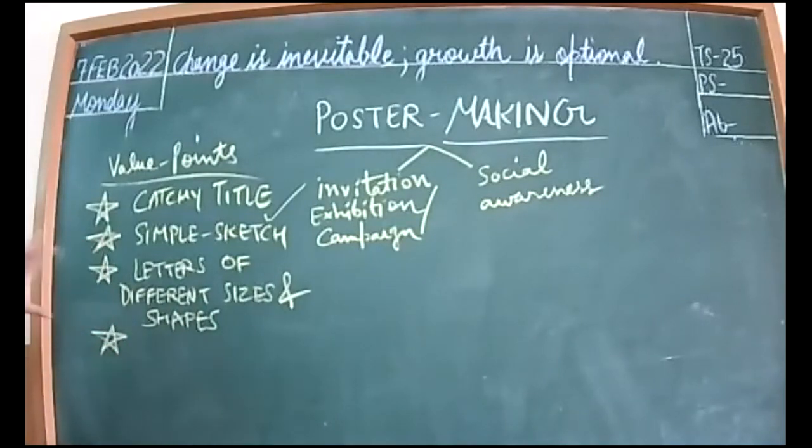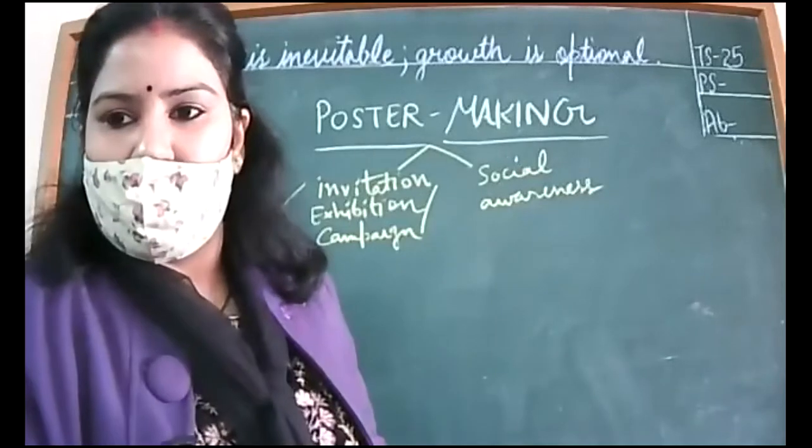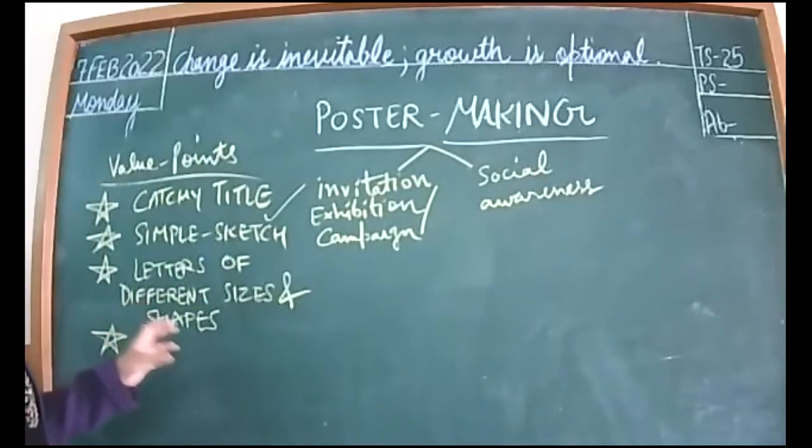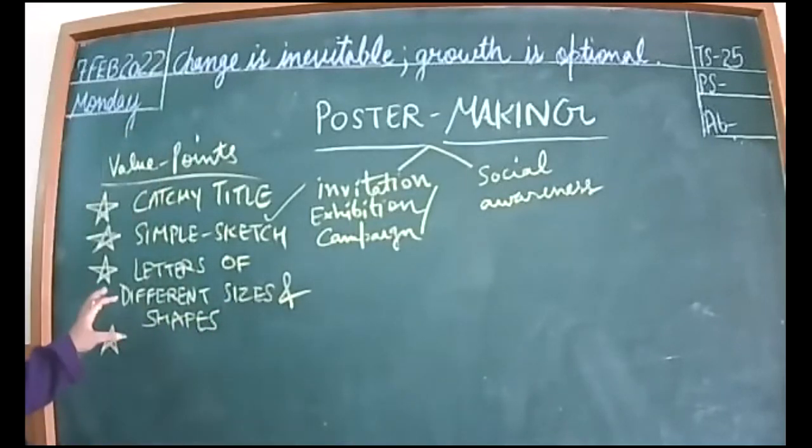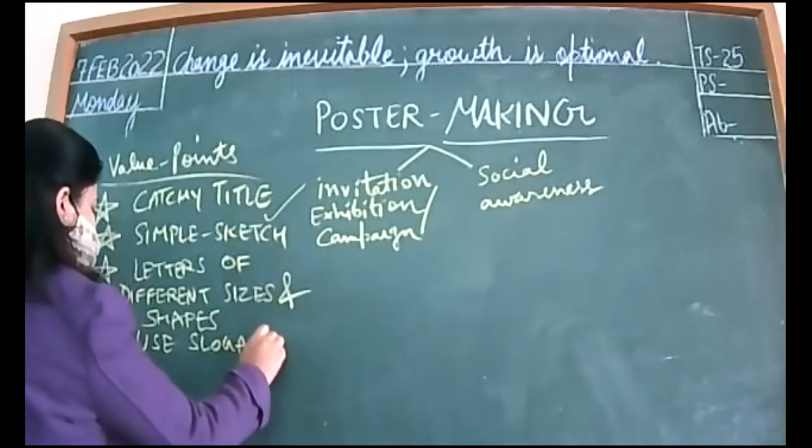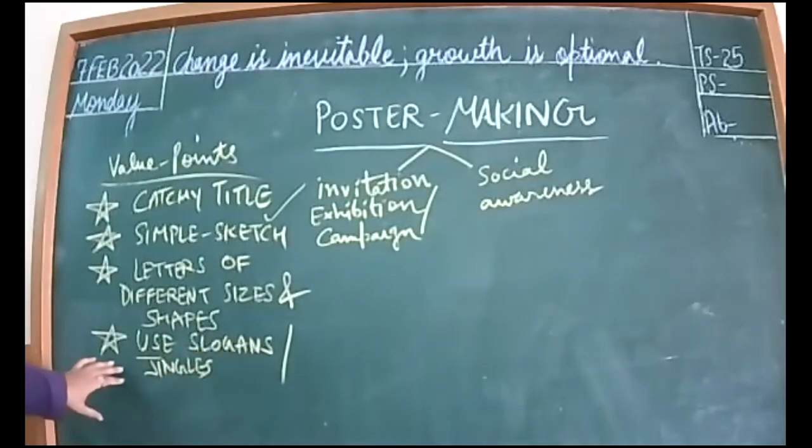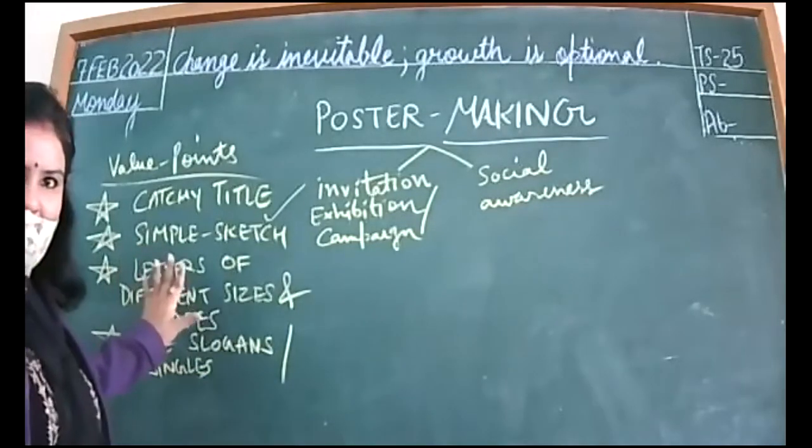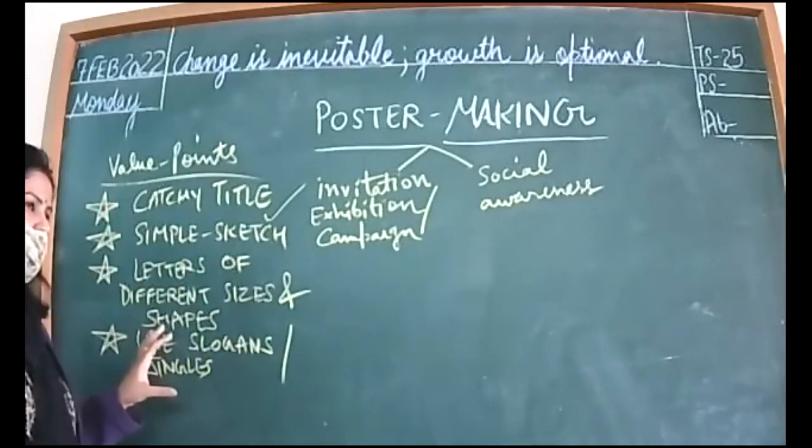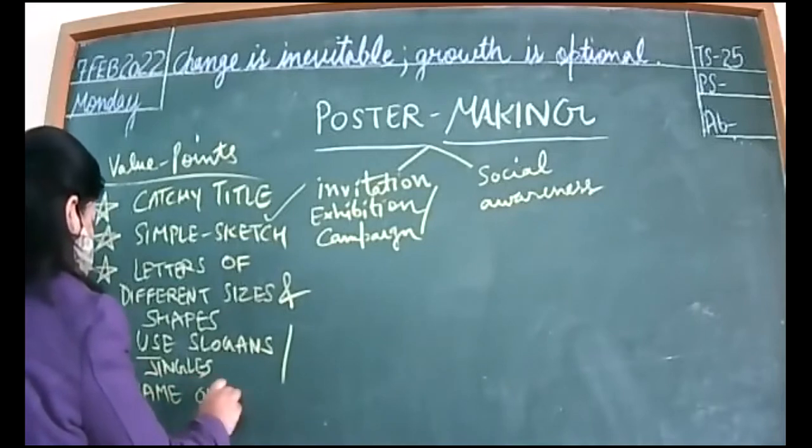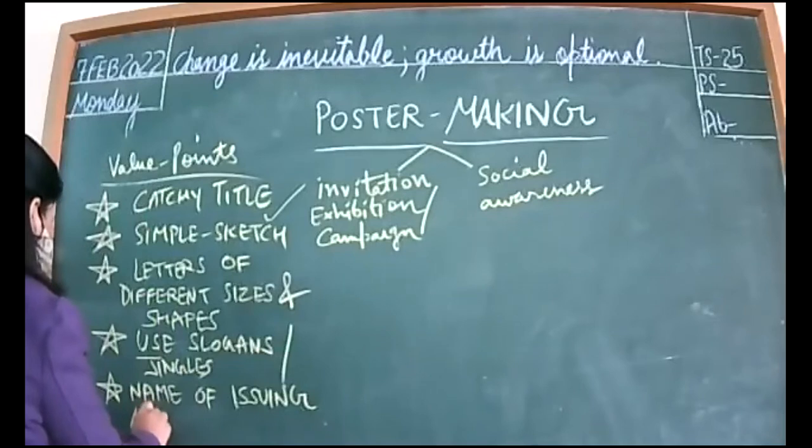Then letters of different sizes and shapes, just to enhance the visual effect of the poster. Suppose the name of the occasion can be written in two lines, bigger and bolder. Similarly, you can use italic. If you are good at calligraphy, you can use that as well. Then after that, use slogans and jingles. Jingles are the rhyming phrases and all. You can use slogans and jingles as well in your poster. Last but not the least, name of issuing authority - who has issued the poster.